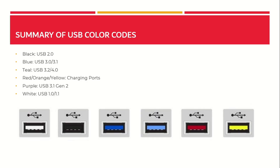To summarize, here is a quick recap of USB color codes and their meanings: Black is USB 2.0; Blue is USB 3.0 and 3.1; Teal is USB 3.2 and USB 4.0; Red, orange, and yellow are charging ports; Purple is USB 3.1 Gen 2; and White is USB 1.0 and 1.1.